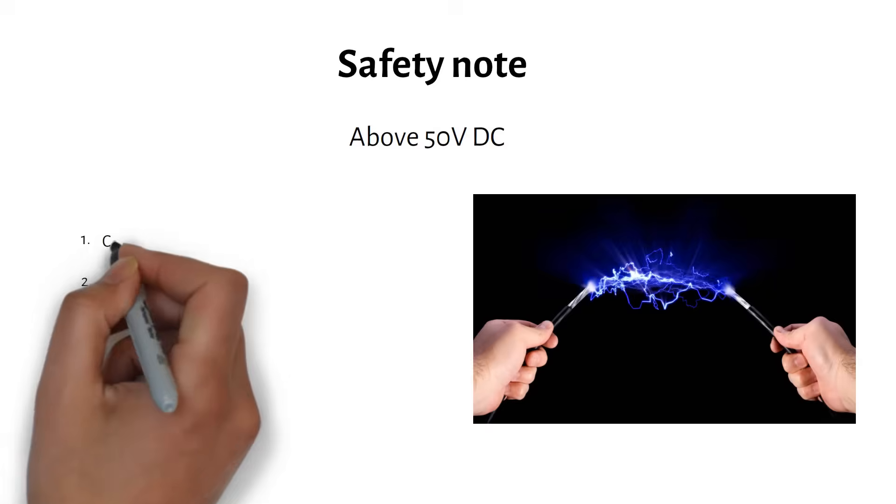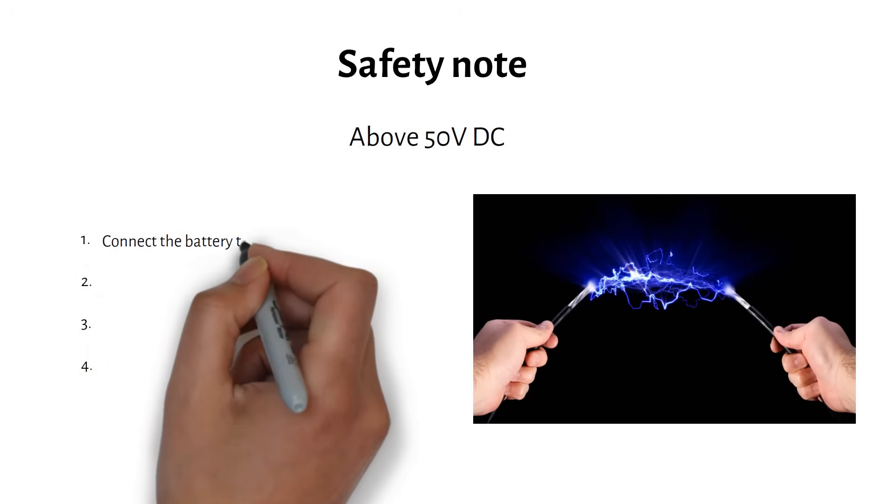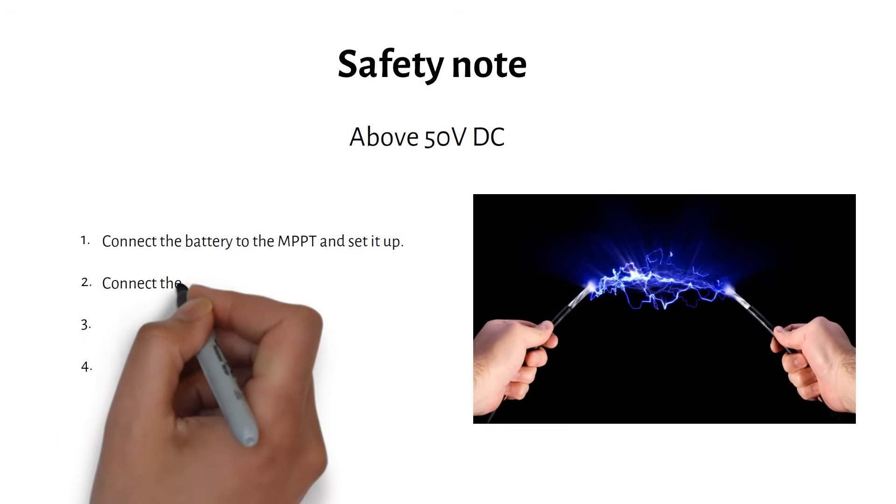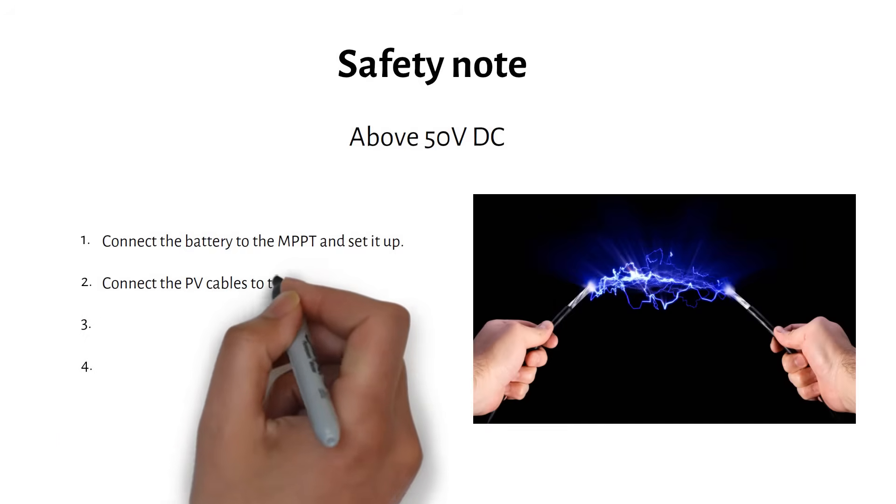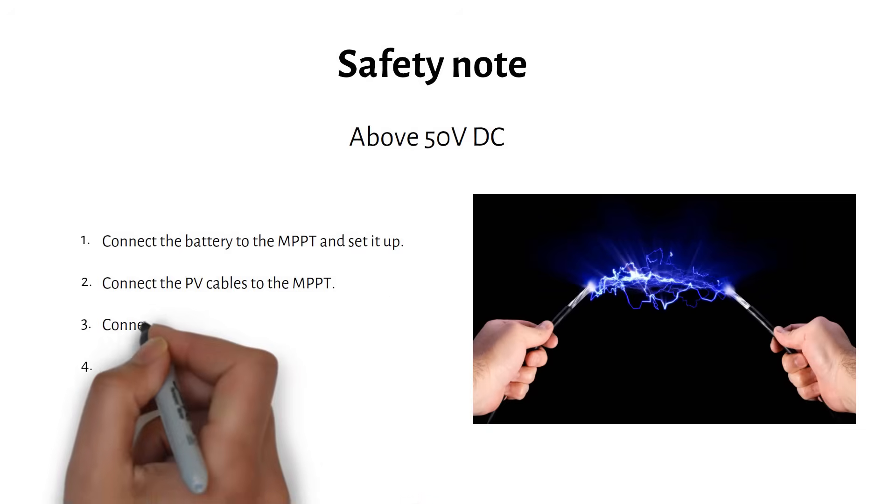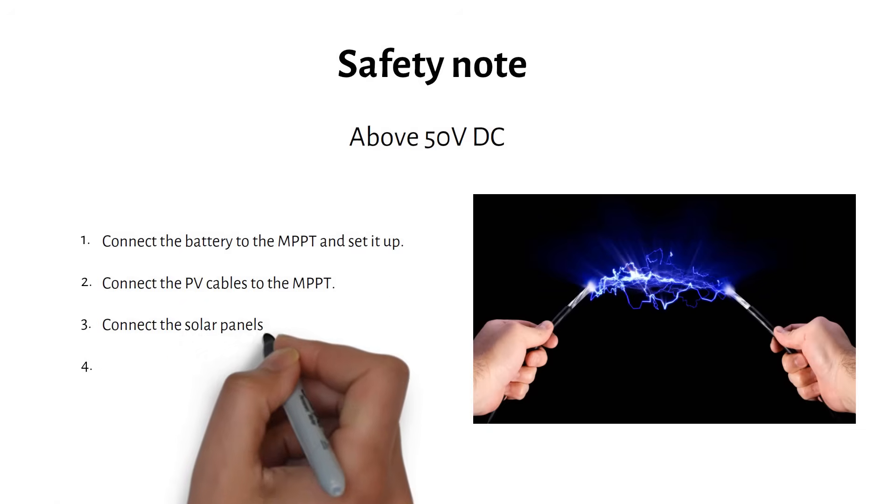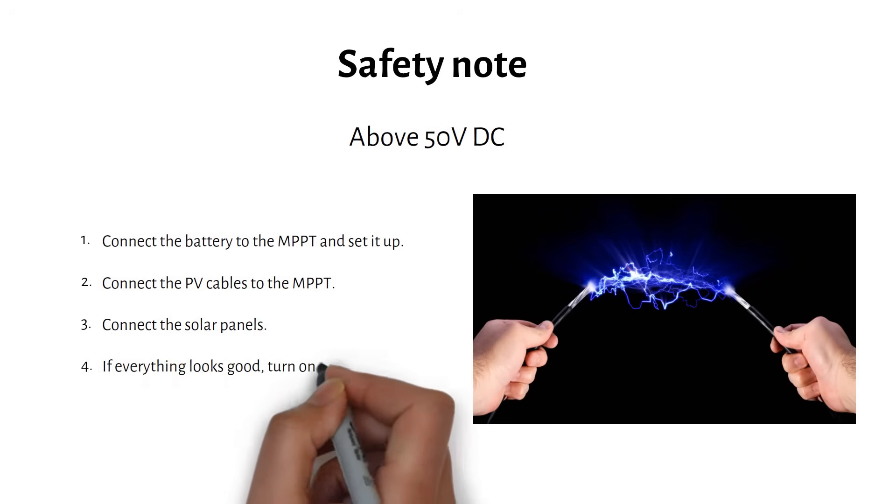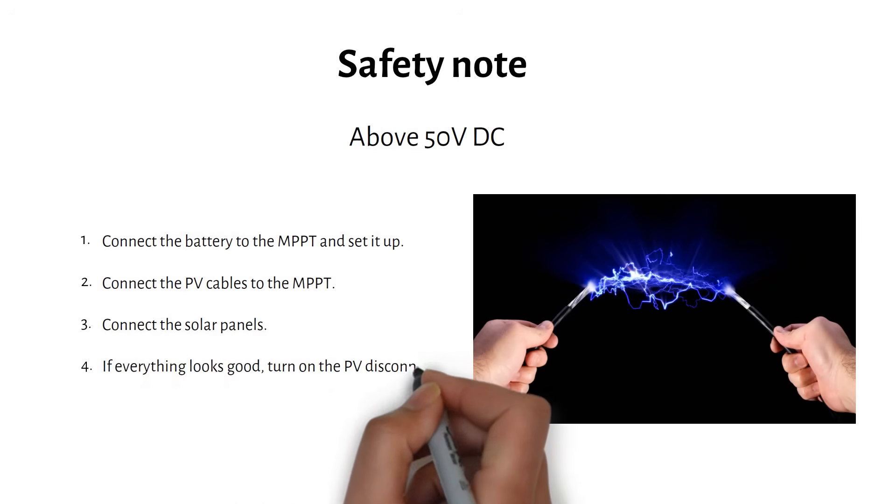So to make it safe, follow these steps. Connect your battery to the MPPT and program it. Then connect the PV cable to the MPPT without connecting your solar panels. Then connect your solar panels, measure the voltage and the polarity with a multimeter. If everything is correct, turn on the PV disconnect switch. Respect the maximum PV input voltage and input current ratings from the MPPT datasheet. And don't work on live PV strings.